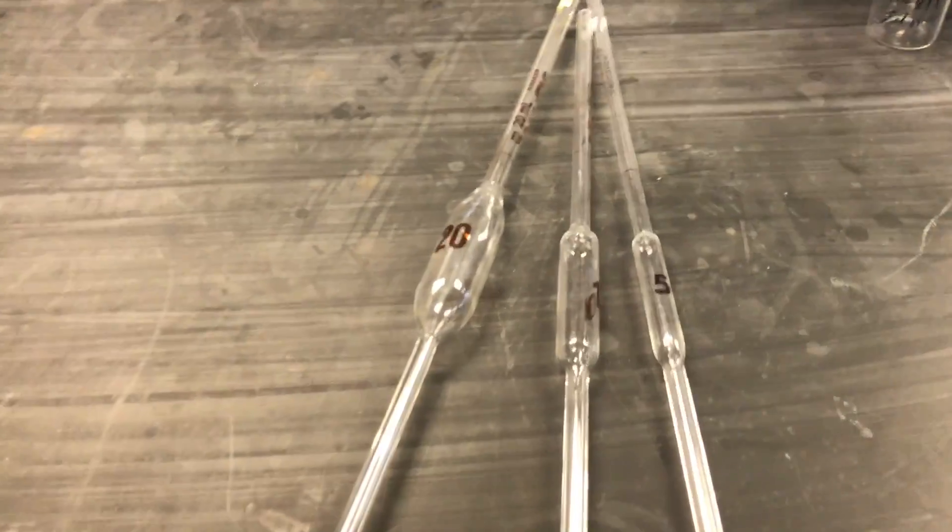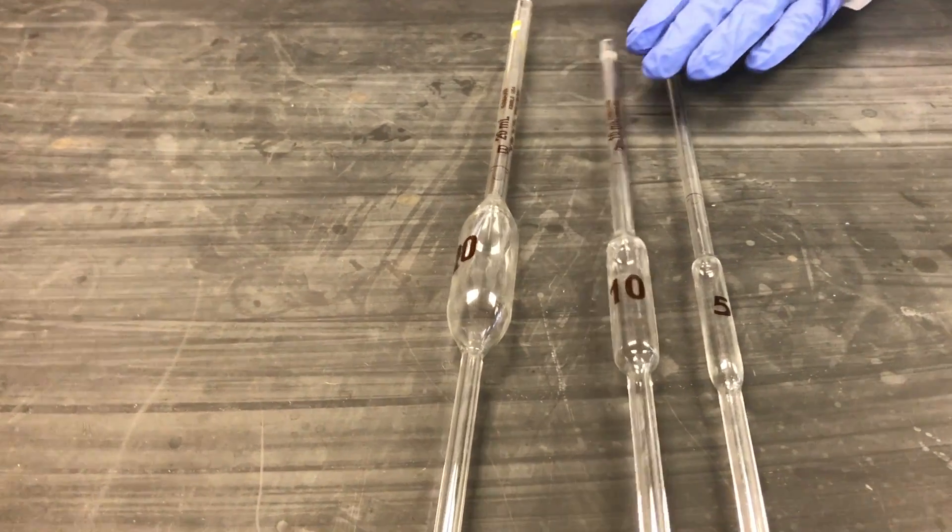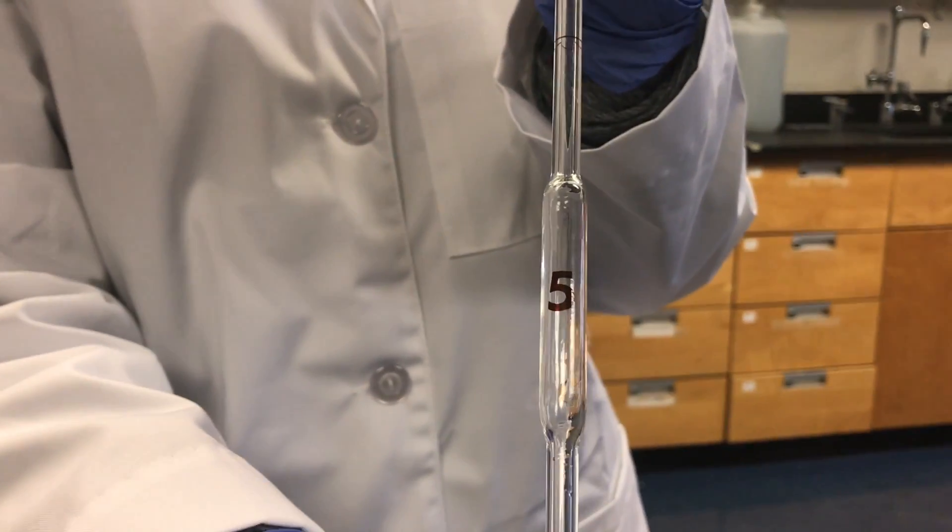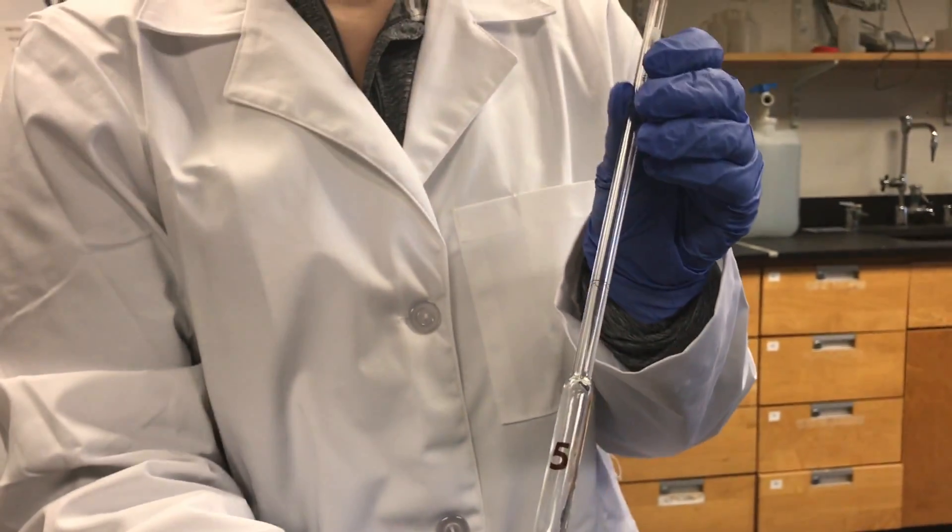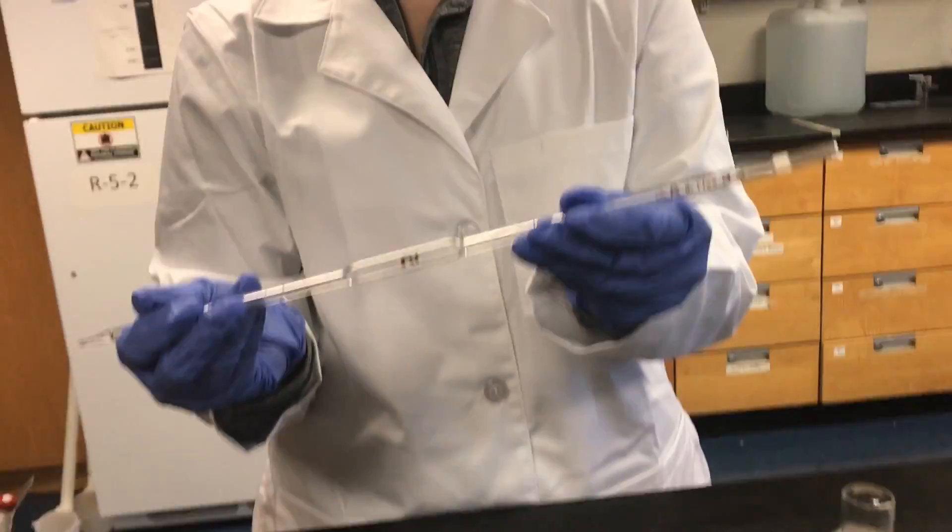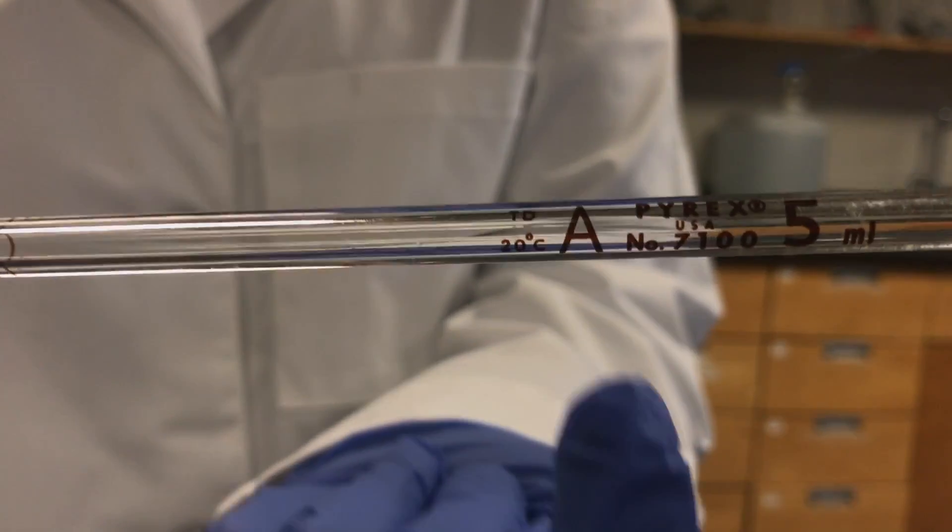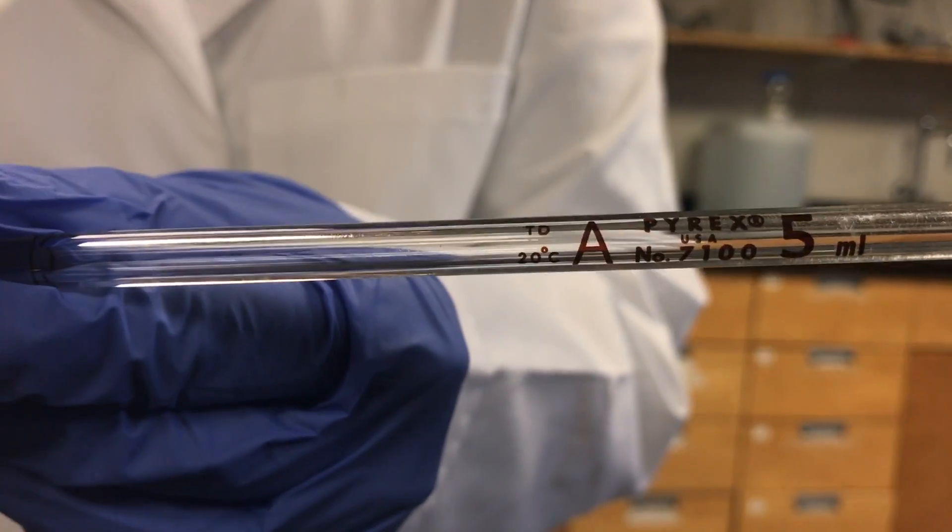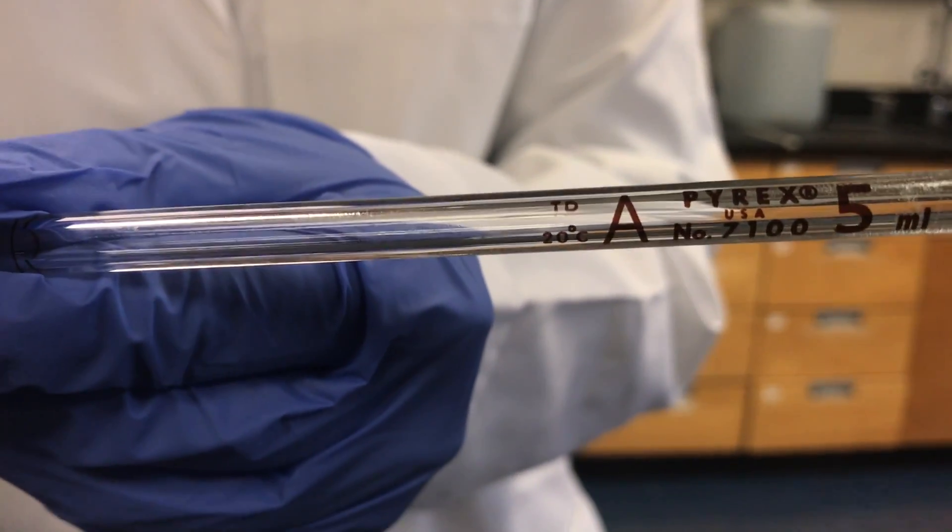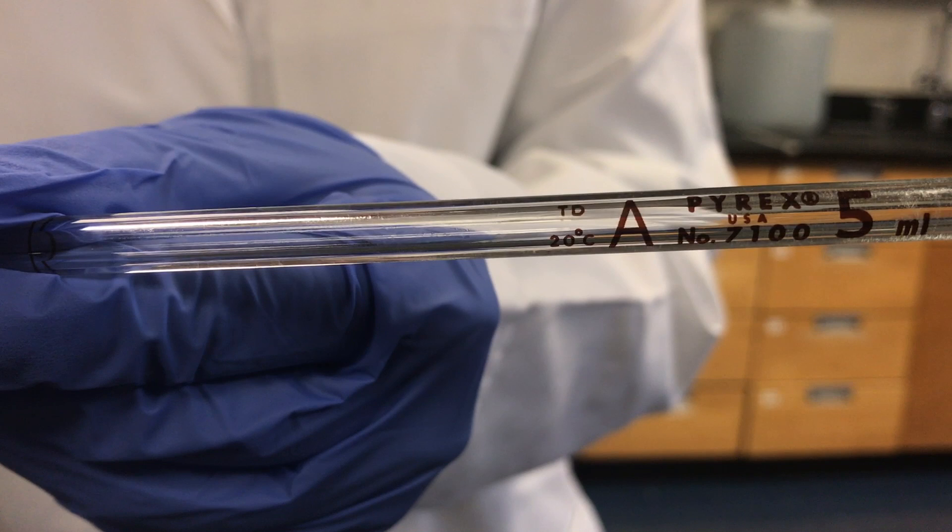Here are some examples of the different volumetric pipettes. Here is a 5 milliliter pipette. It's important to note the information on the top of the pipette. The letter at the top refers to the class of the glassware. This pipette is a class A which refers to the error associated with the glassware, but you can look up in chapter 2 of your Harris textbook.